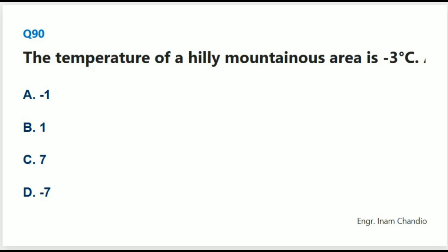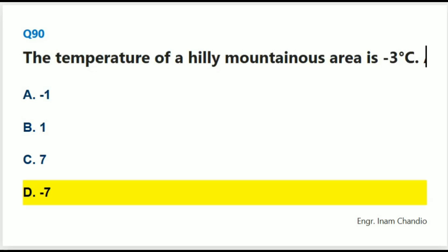The temperature of a hilly mountainous area is -3°C. After a few hours, it drops by 4°C. Then the temperature will be: The correct answer is D. -7°C.